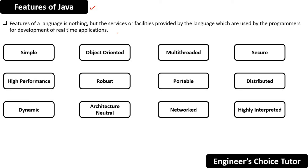We are going to see each and every buzzword in detail — why Java is called simple, why Java is called dynamic, and so on. Let's start with the first buzzword: simple.